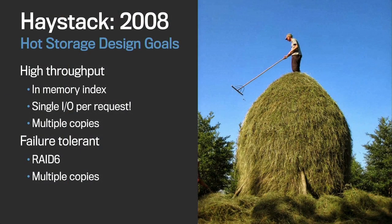Three copies is what we've settled on for Haystack. The second property of a hot blob storage system is fault tolerance, and we also achieve that in two ways. On the host level we use RAID 6, which prevents us from suffering data loss due to drive failure. We also keep three copies in different data centers, and this protects us from any three-host failure. We would have to lose up to three data centers in order to experience an unrecoverable failure. Thankfully, that's never happened.